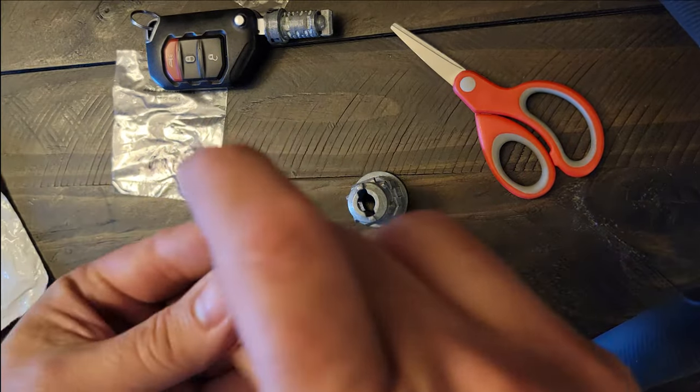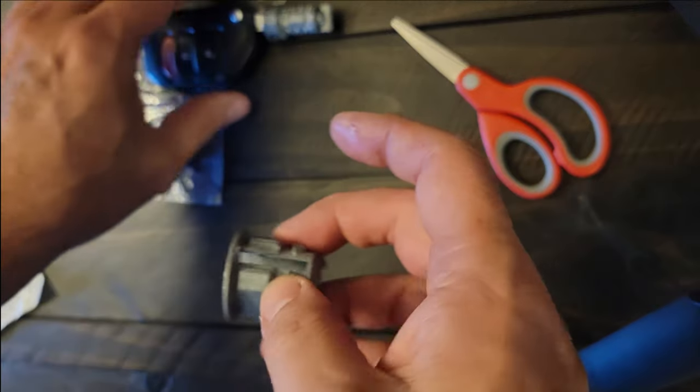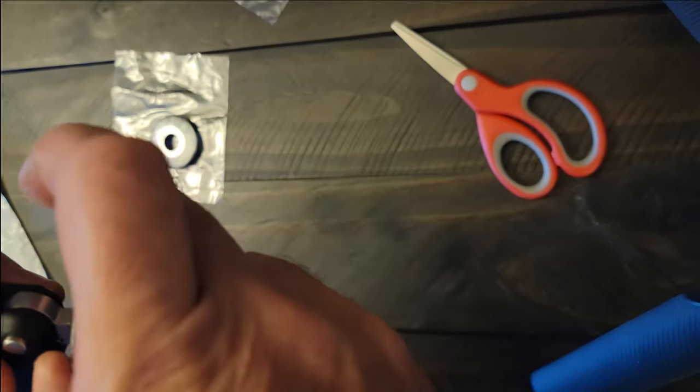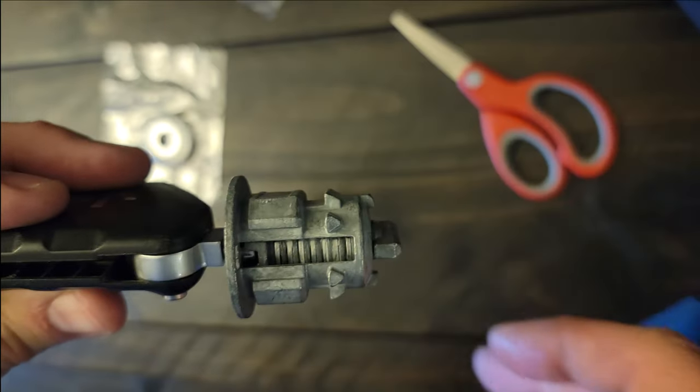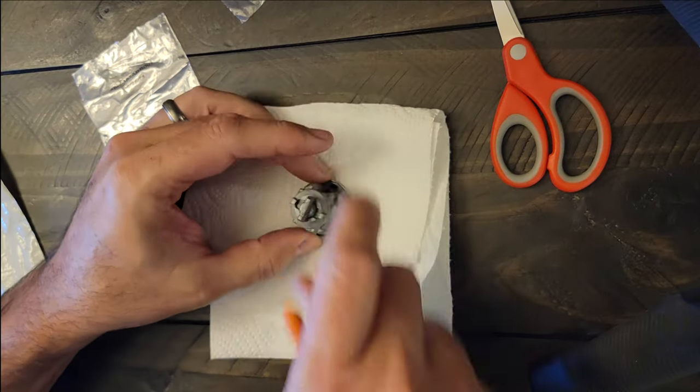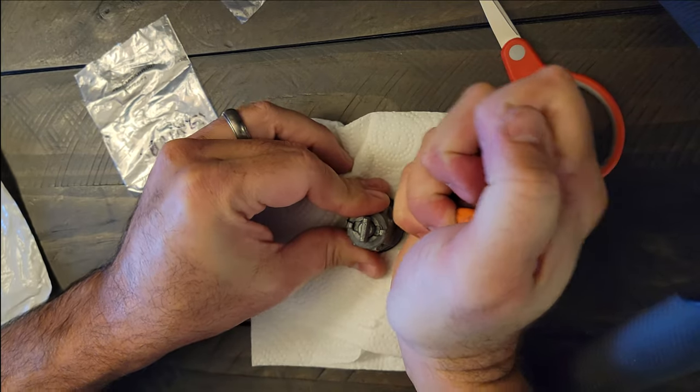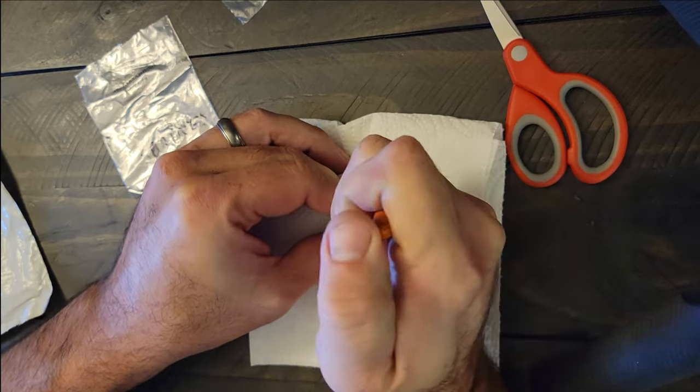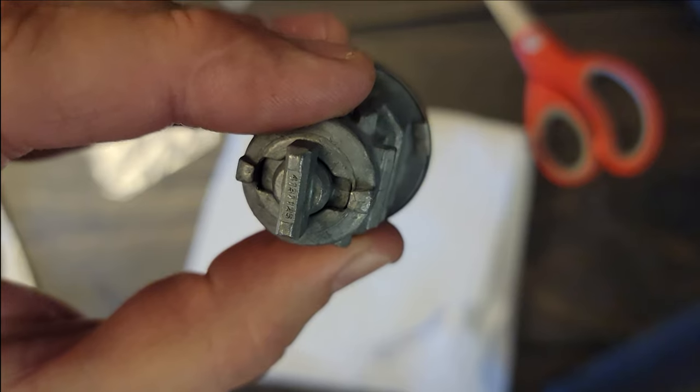Now it's time to put everything together. This is the cover for these little retaining tabs. Insert the cylinder into the outer cylinder so that it spins around freely when the key is inserted. Put the cover down and then we're going to fold over these four flaps on the outside of the cover to retain the cylinder.